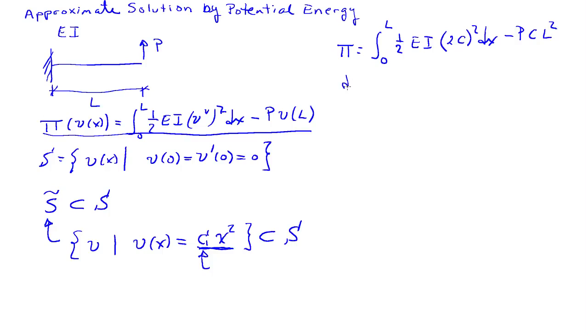Taking the derivative of pi with respect to C gives us the integral from 0 to L of EI times 2C times 2 DX minus PL squared.